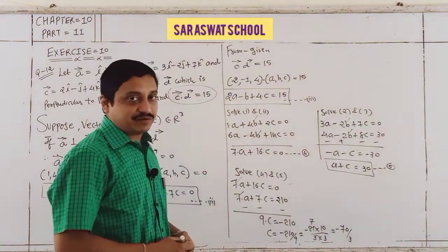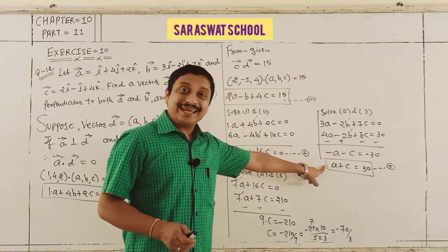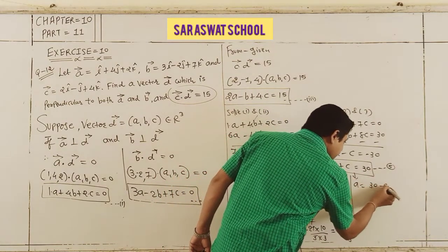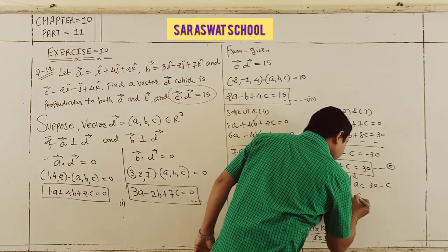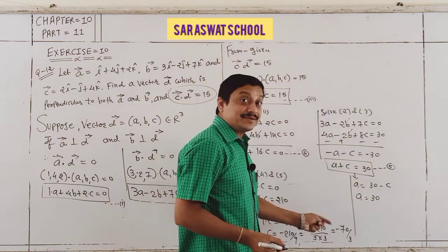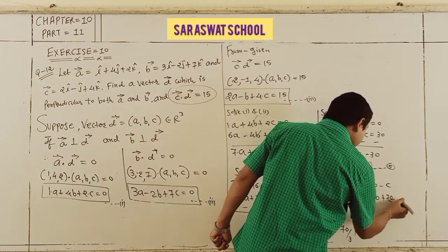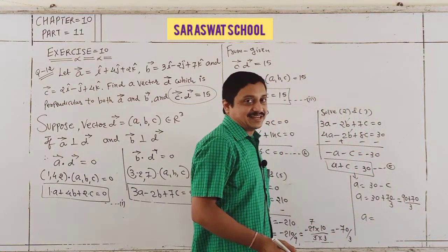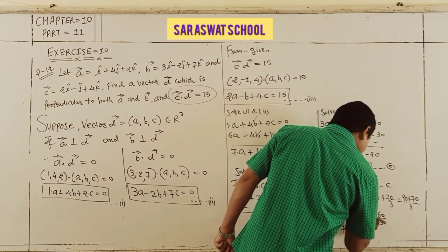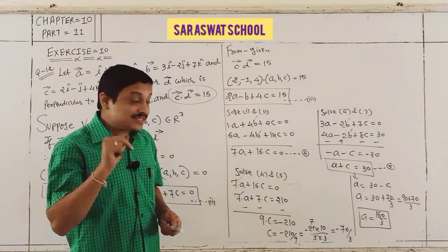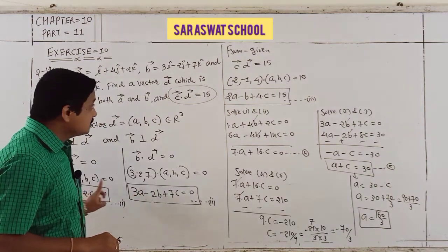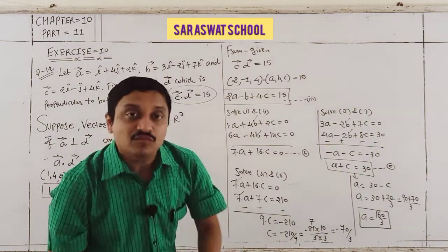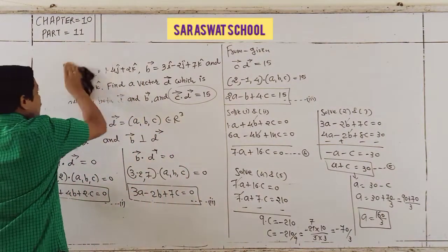Value of c is covered. Now from equation 5: a = 30 − c = 30 − (−70/3) = 30 + 70/3 = 90/3 + 70/3 = 160/3. So a = 160/3. Now put a and c into any of equations 1, 2, or 3 to find b.